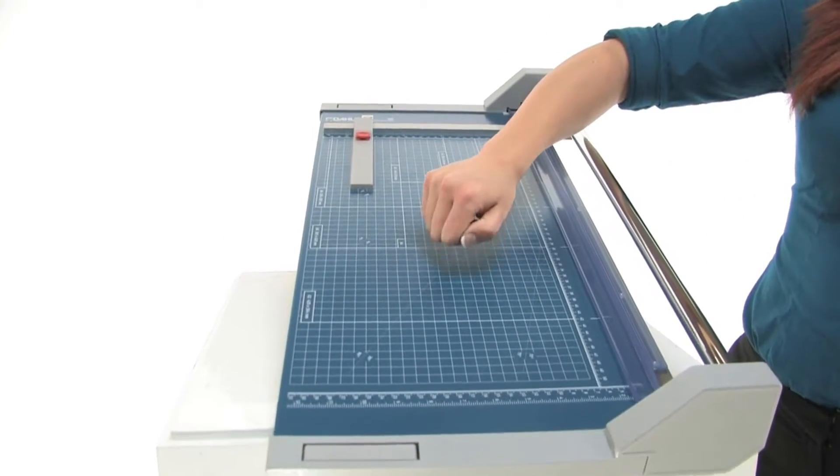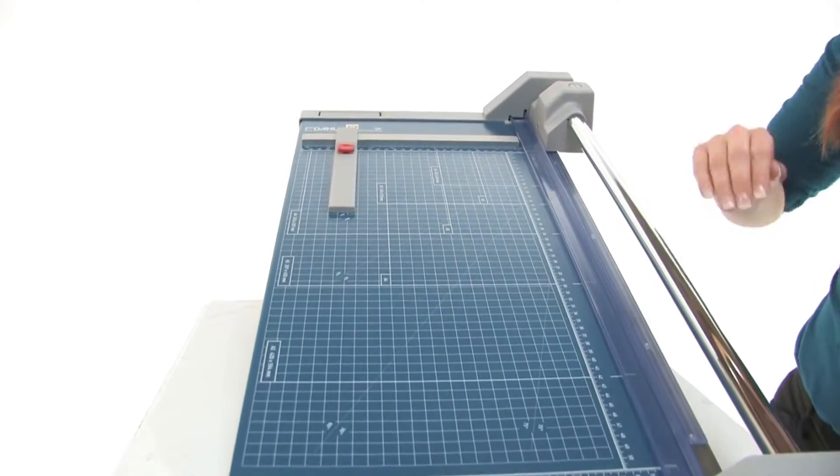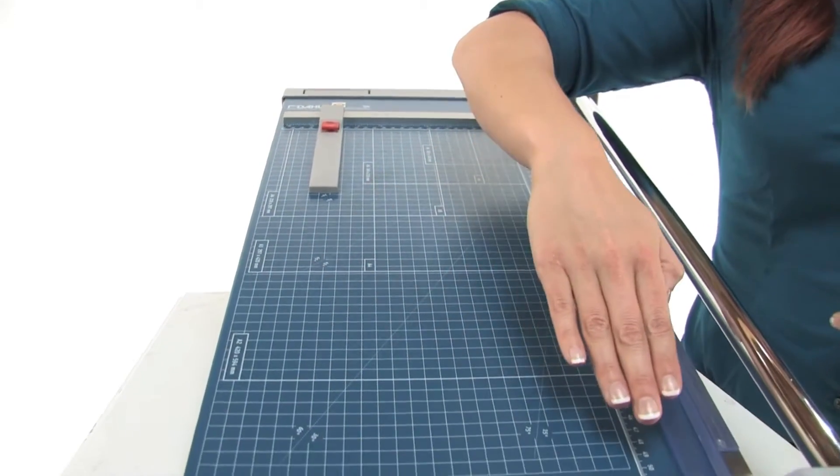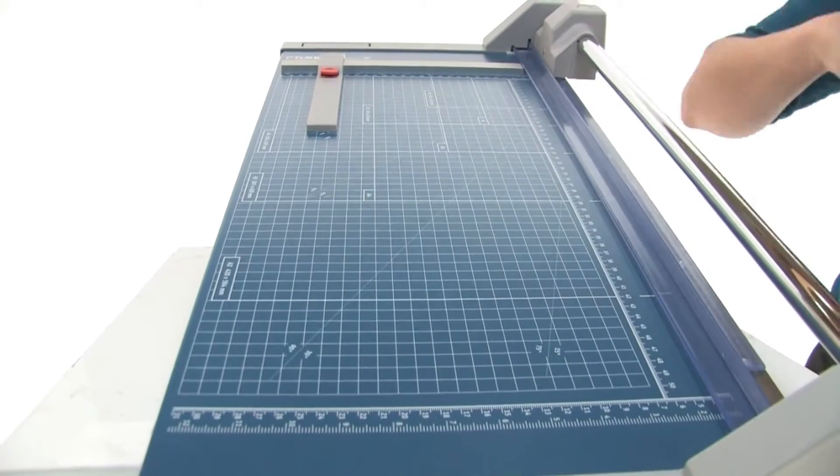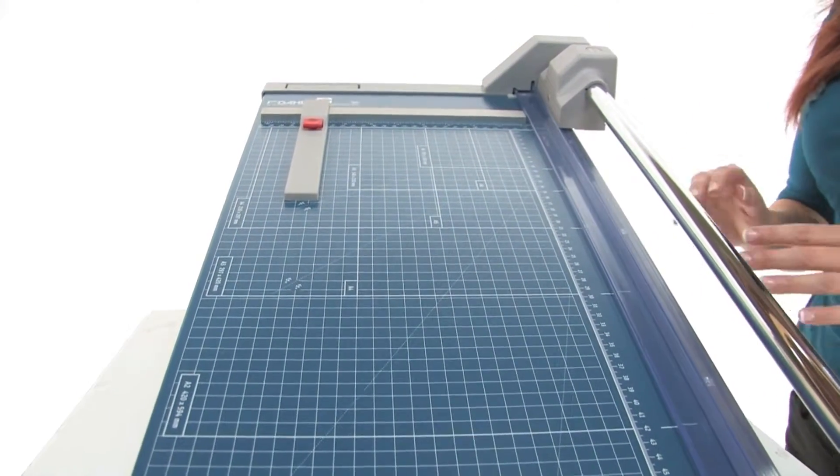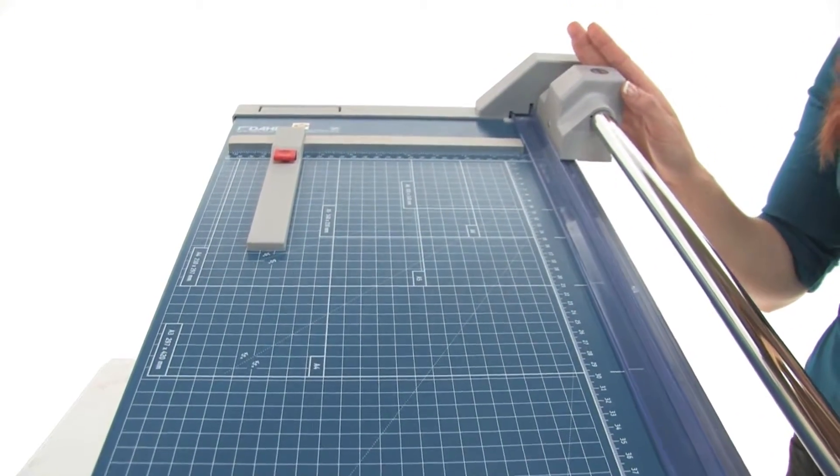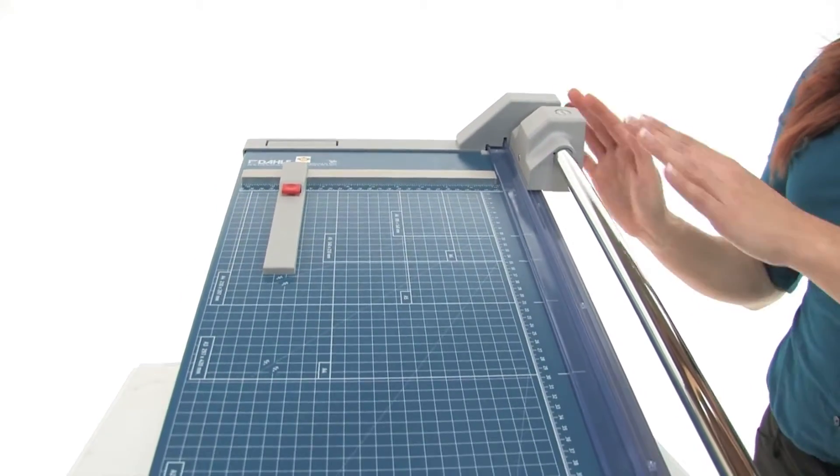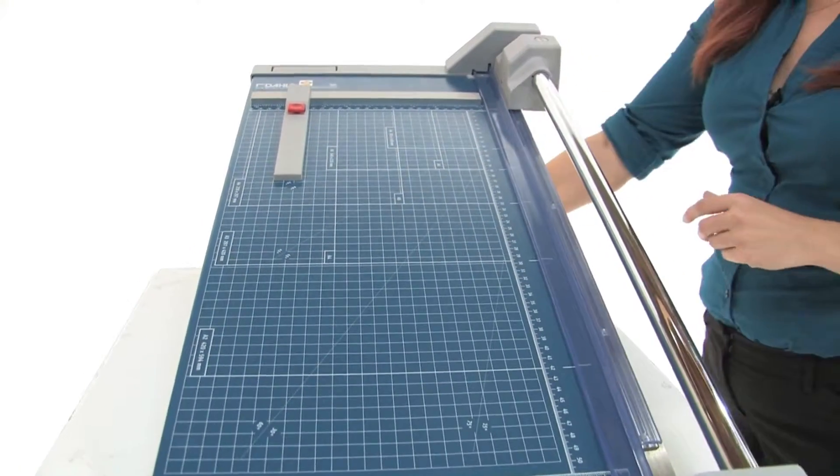It has a sturdy metal base that won't warp like wood bases, pre-printed guides with inches and metric measurements. It has a 14 and a quarter inch cut length and comes with a self-sharpening rotary blade encased in plastic housing to prevent injuries. The blade can cut in either direction.